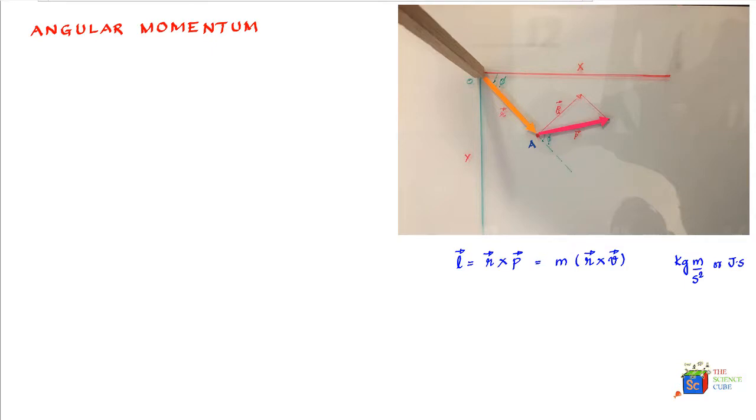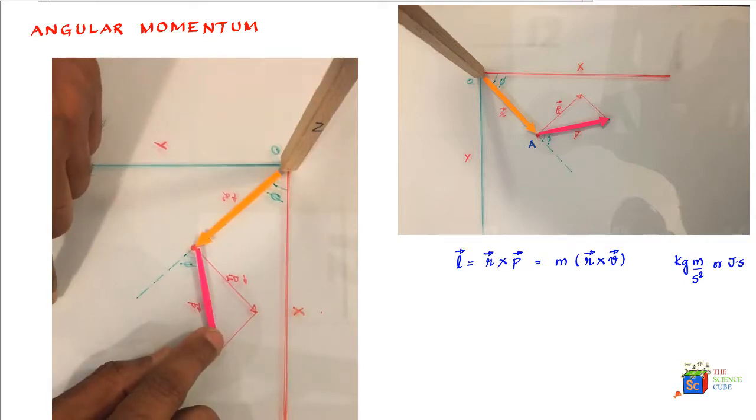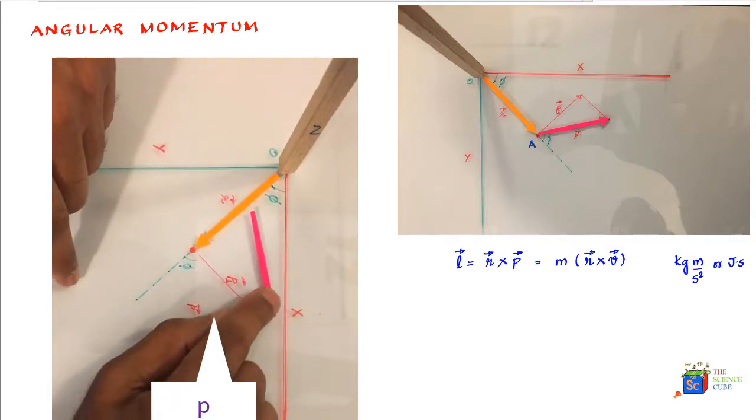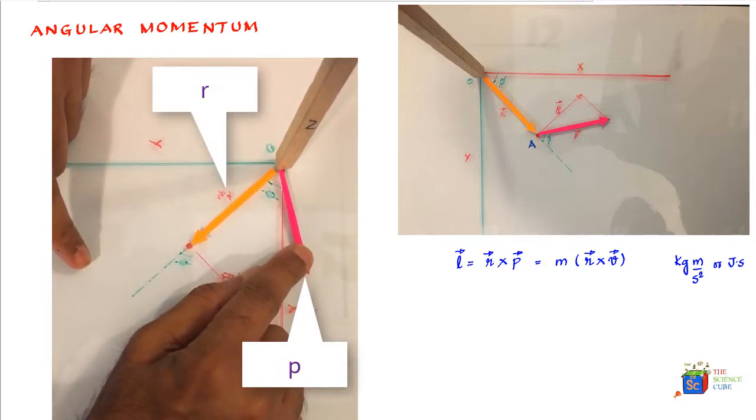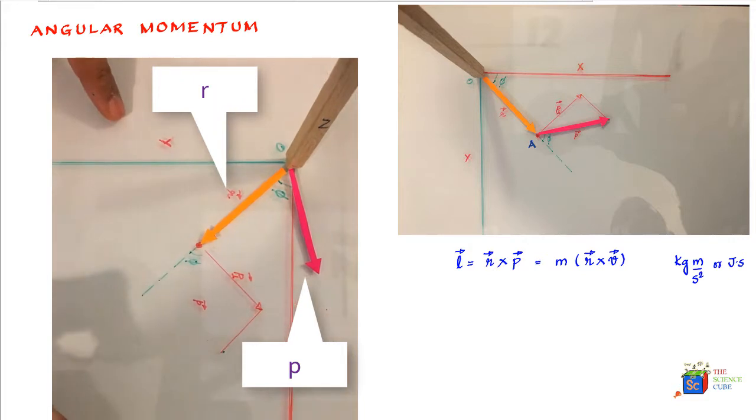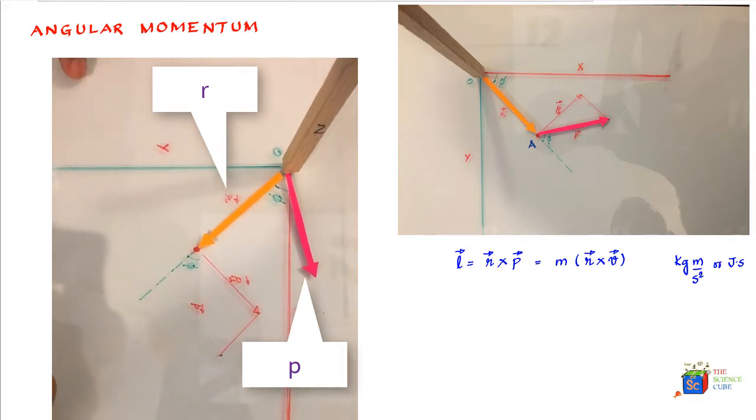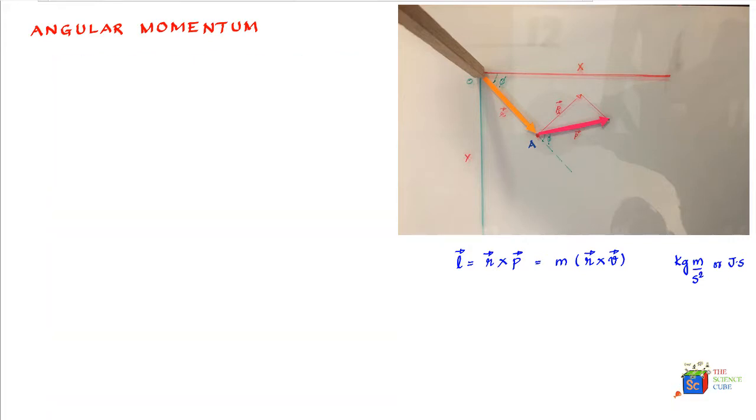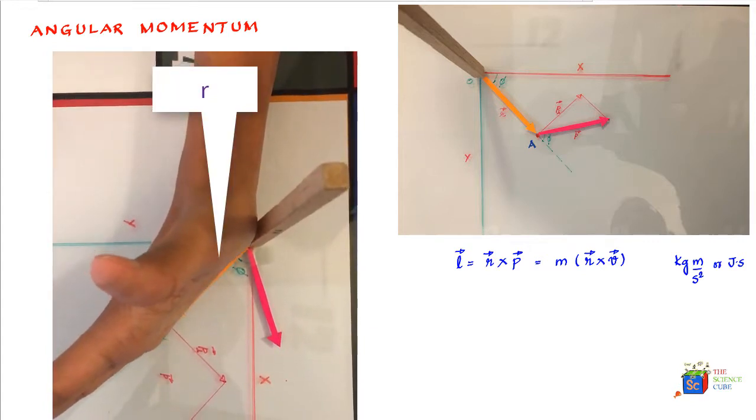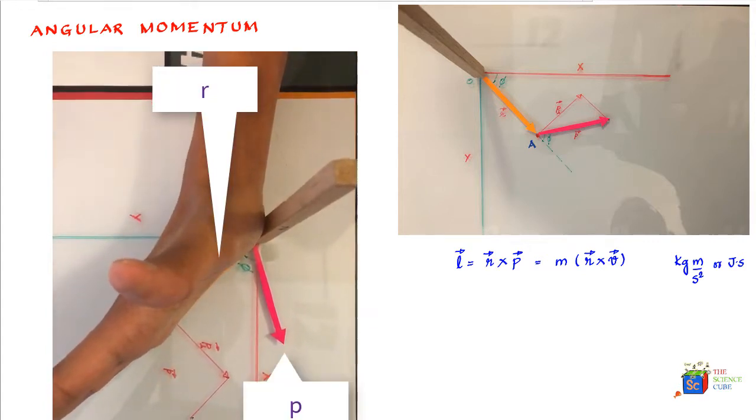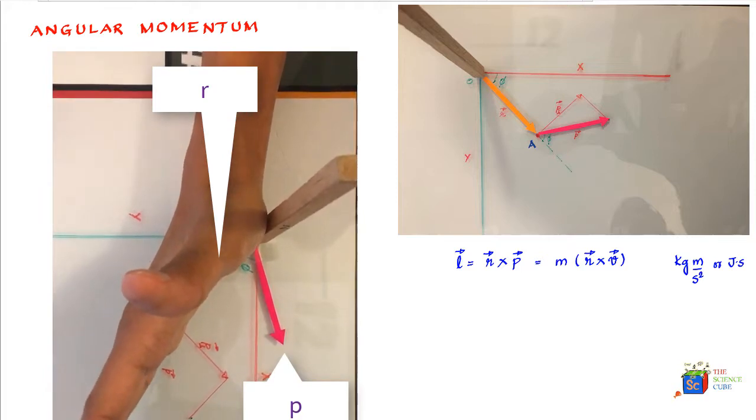To find the direction of vector L, we slide vector P towards the origin till its tail is aligned with the tail of vector R. Then we use the right hand rule for vector product and sweep the fingers from vector R towards vector P. Notice the position of the hand.